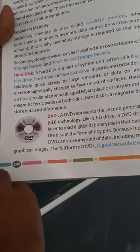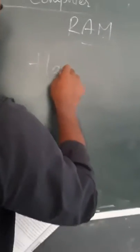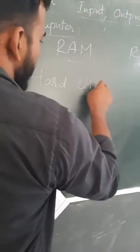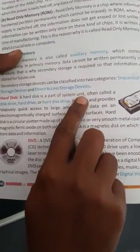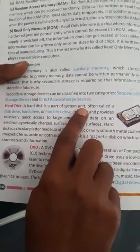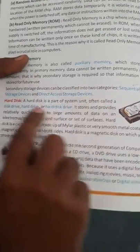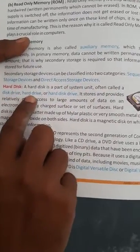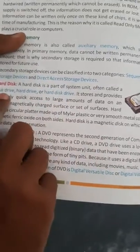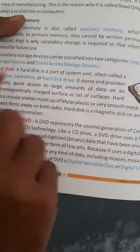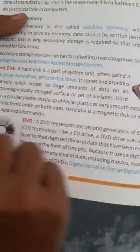Hard disk among secondary storage devices. A hard disk is a part of system unit, often called disk drive, hard drive, or hard disk drive. It is a part of system unit.